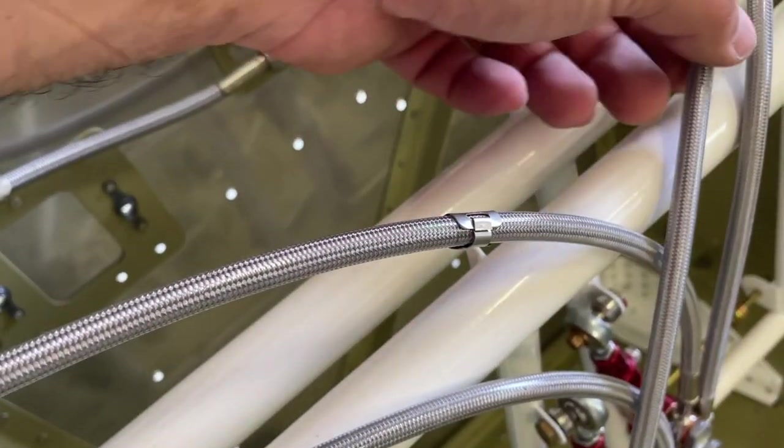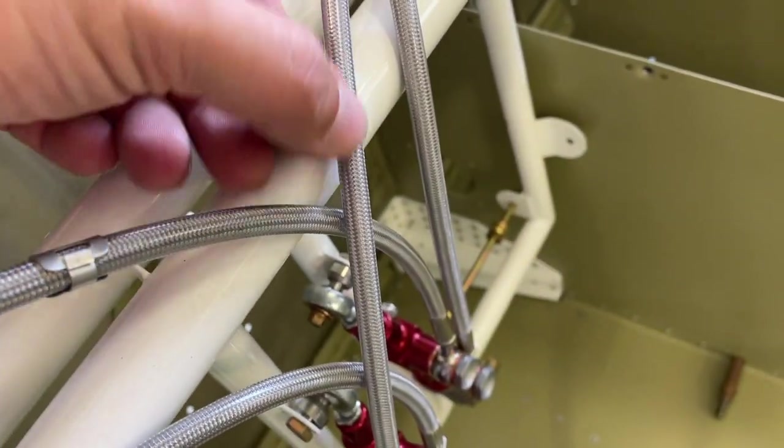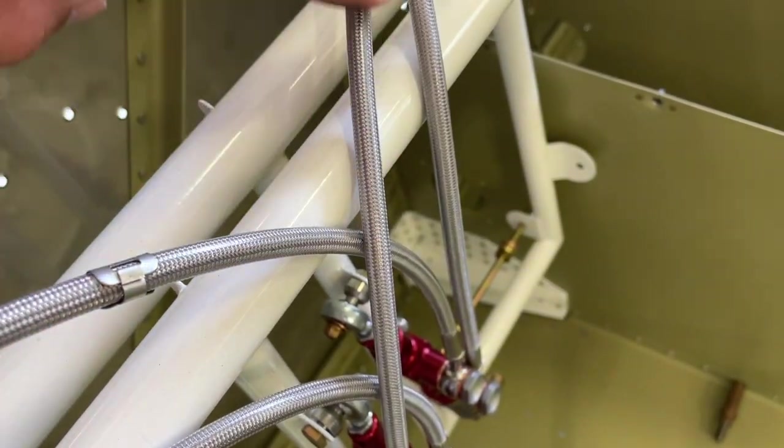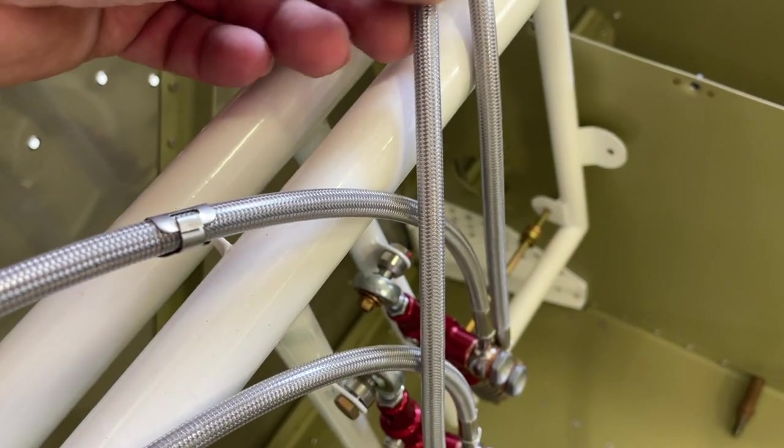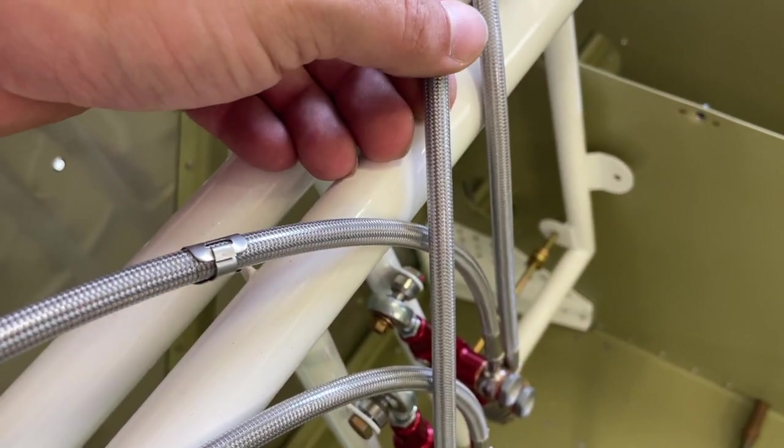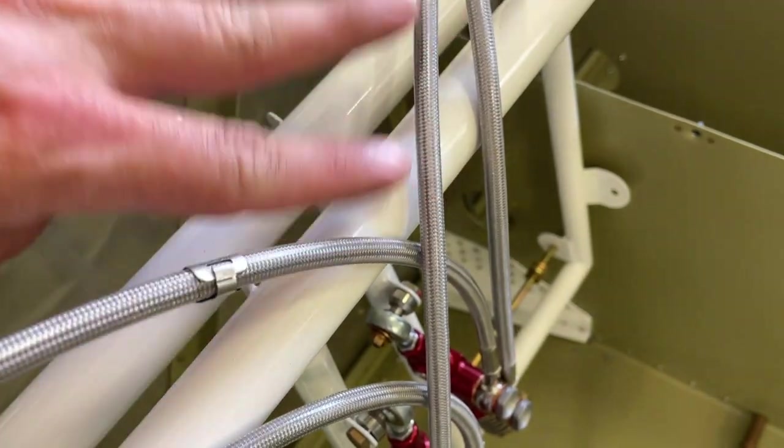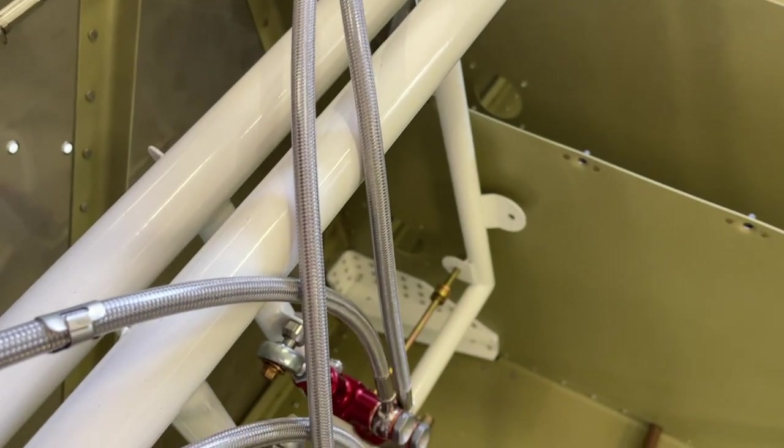You'll notice that the hoses are rubber coated. There's this nice little soft feel coating on them. That's the case for the brake hoses, but not for the fuel hoses. The fuel hoses are much bigger, so they don't get that.